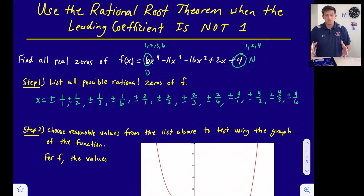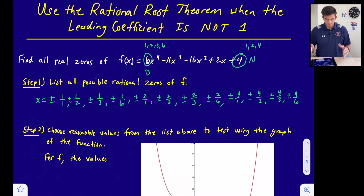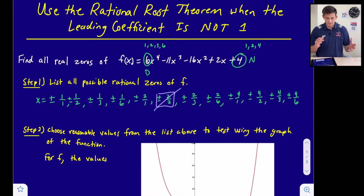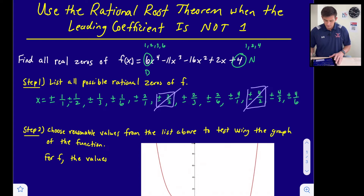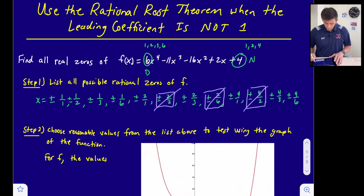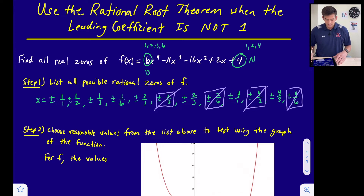Now we notice there are a lot of possible rational zeros, but some are the same. 1/1 and 2/2 are both equal to 1, so we exclude the duplicate. 4/2 equals 2, same as 2/1. 2/6 equals 1/3, so we exclude that. 4/6 equals 2/3, so we exclude that as well. We were able to eliminate eight duplicates from our possible zeros.